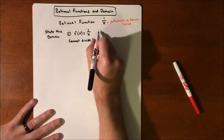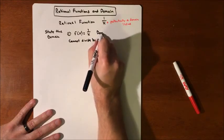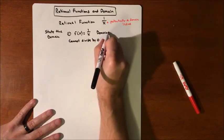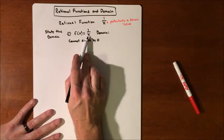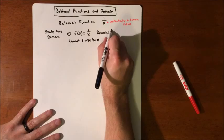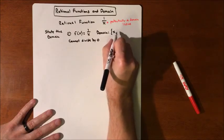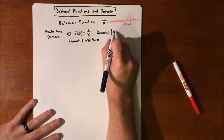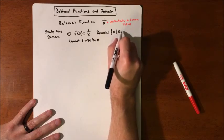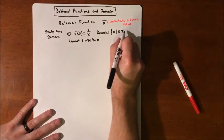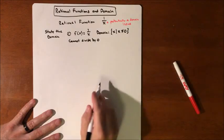So for our domain, we want to make sure that all the numbers that we plug in don't cause us to be dividing by zero. So for what we have on this one, our X's that we can plug in are a set of X's such that X, as long as it does not equal zero, we are okay.